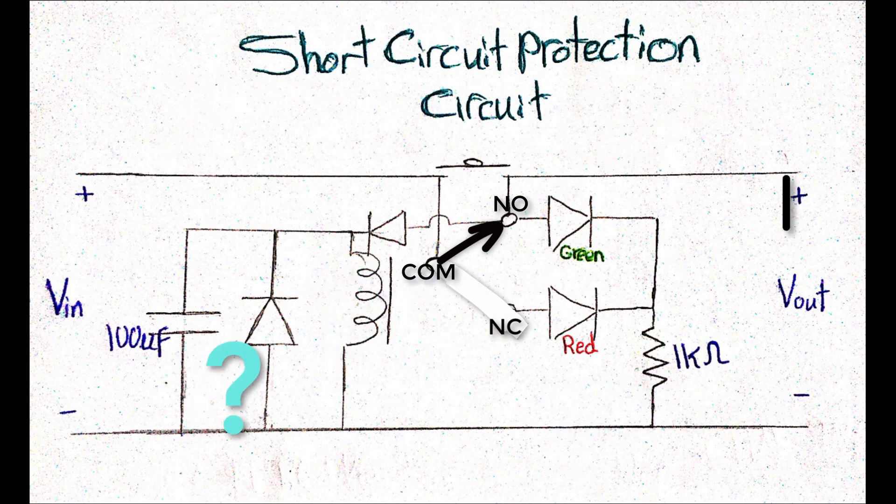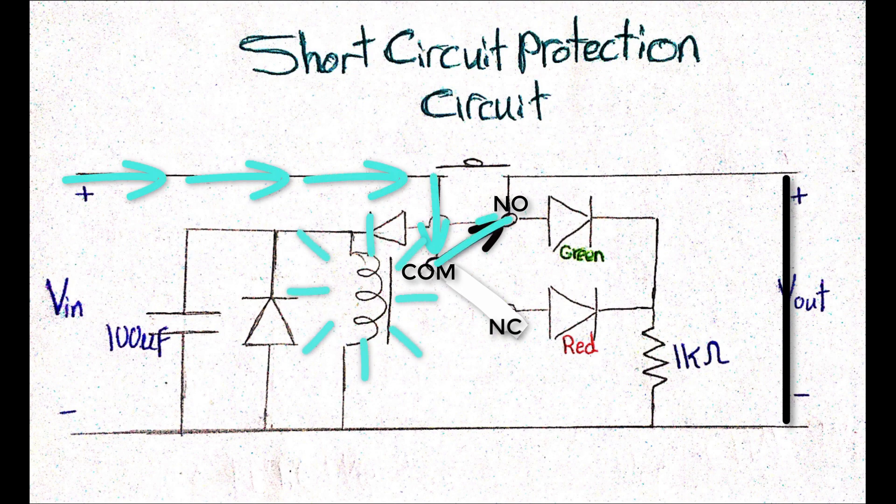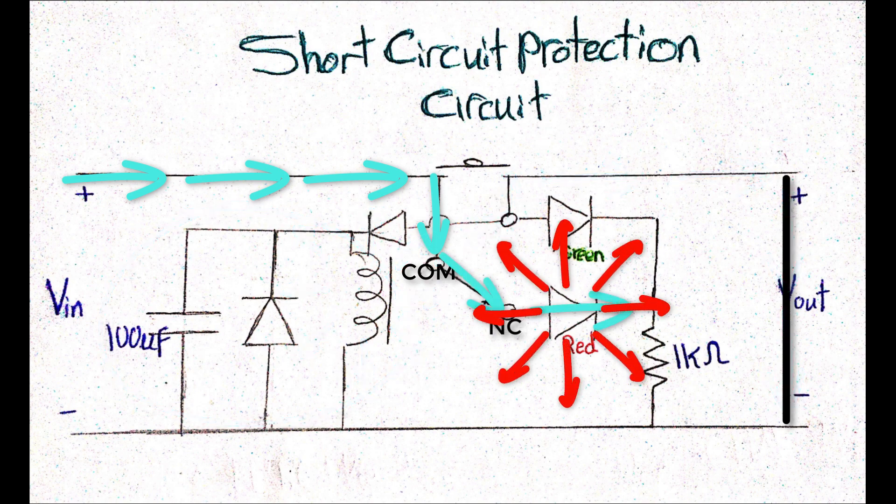When a short circuit occurs, what happens is that the electrical current will definitely select the path with lower resistance, shorting this whole part, which will lead to de-energize the relay coil, and the relay switch will return to its normal state.